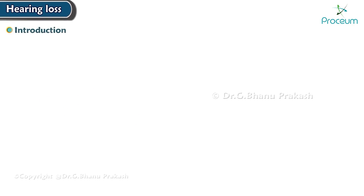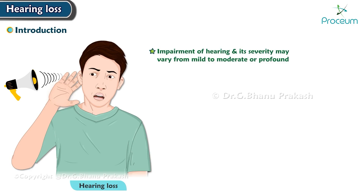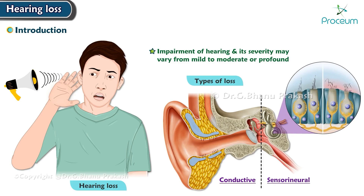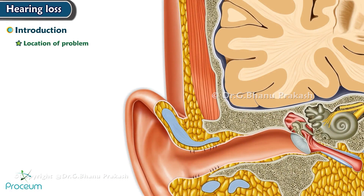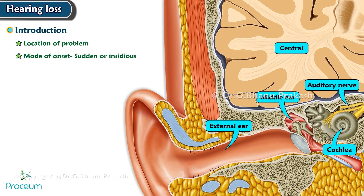Hearing loss is defined as impairment of hearing, and its severity may vary from mild to moderate or profound. It is characterized by types of loss such as conductive and sensorineural. The location of the problem is usually seen in the external ear, middle ear, cochlea, auditory nerve, and central pathways. Mode of onset is sudden or insidious, degree of loss is mild, moderate, or severe, and hearing loss may be bilateral or unilateral.